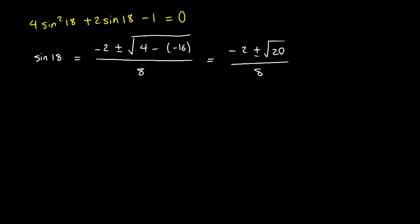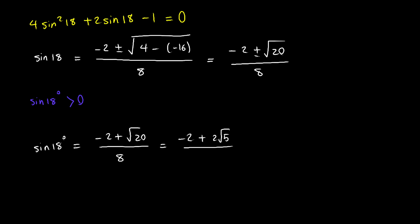Notice that 18 degrees is in the first quadrant, so sine of 18 degrees is a positive quantity. We found two solutions — a positive and a negative — so the negative solution is not valid. Therefore, sine of 18 degrees equals the positive solution: negative 2 plus root 20, divided by 8. This can be simplified further by rewriting root 20 as 2 times root 5, then dividing top and bottom by 2, giving negative 1 plus root 5, over 4.